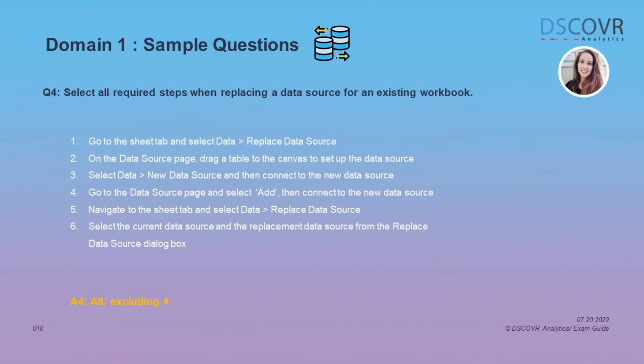With multiple choice questions you will see both single response and multiple response. In this question we're asked to select all required steps when replacing a data source for an existing workbook. First you need to think of how you would bring in an entirely new data source into Tableau, and then consider the steps to replace the original. If you take a closer look at option 4, adding a connection from the data source page will actually result in a cross-database join — but we're interested in bringing in an entirely new data source, so we can simply exclude that option. Make sure you review the difference between adding a data source from the Data tab of your main menu versus adding a new connection from the data source page.